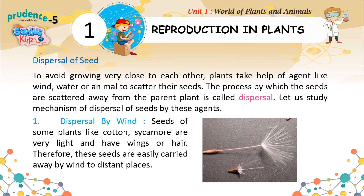Dispersal of Seeds: To avoid growing very close to each other, plants take help of agents like wind, water, or animals to scatter their seeds. The process by which seeds are scattered away from the parent plant is called dispersal. Dispersal by wind: seeds of some plants like cotton and sycamore are very light and have wings or hair. Therefore, these seeds are easily carried away by wind to distant places.